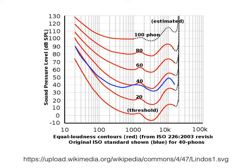Historically we call these graphs Fletcher-Munson curves, but updated models are available.